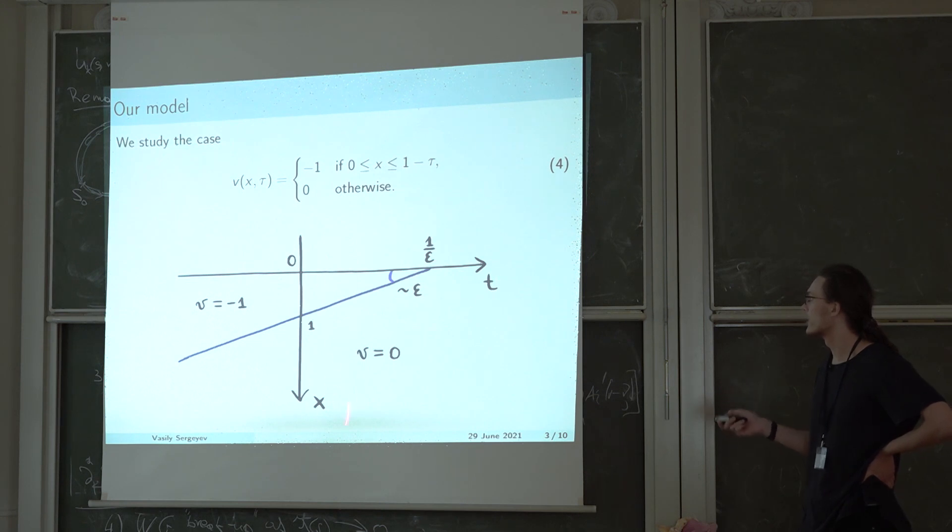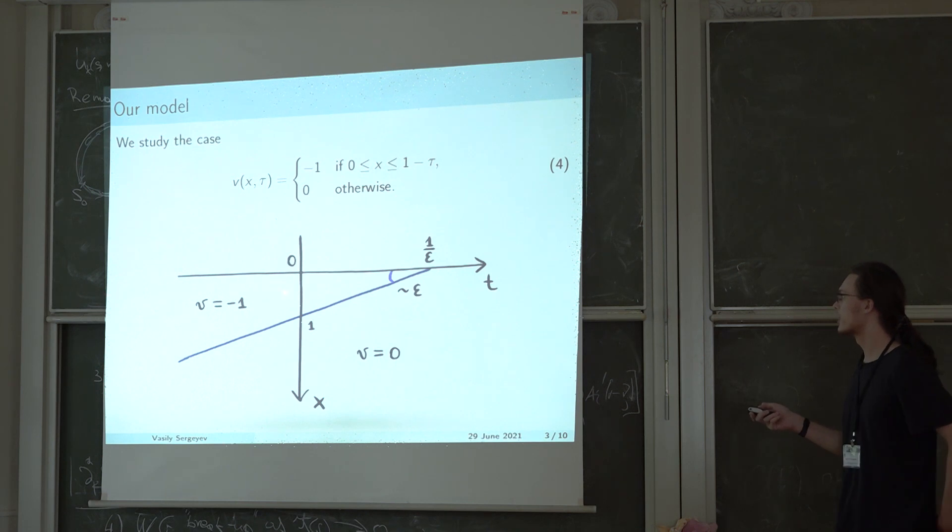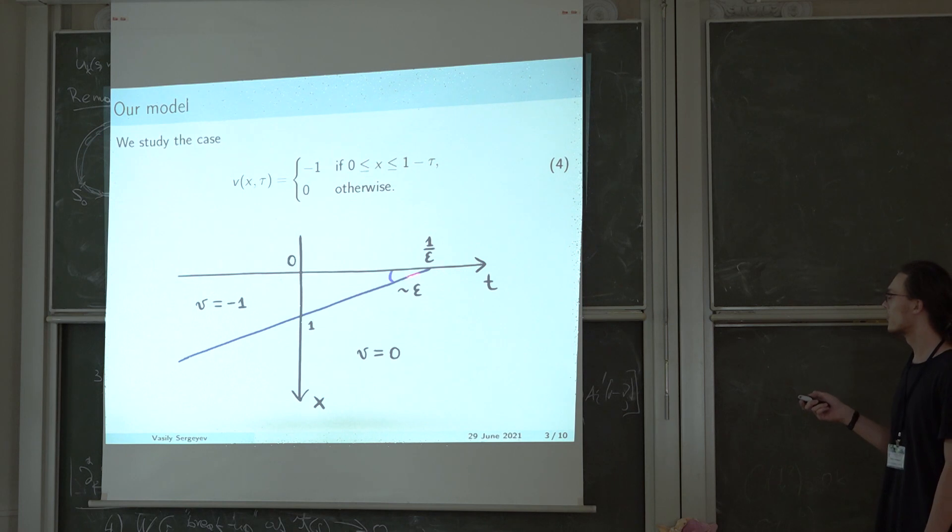It is minus 1 if x is from 0 to 1 minus tau, and 0 otherwise. So this is a square well that shrinks with the time t. It shrinks slowly and the region of the half plane corresponding to the inside of the potential well forms a small sector with a small angle.